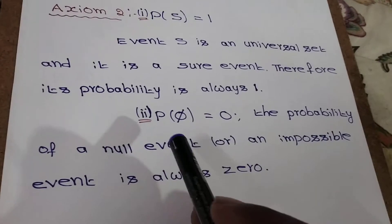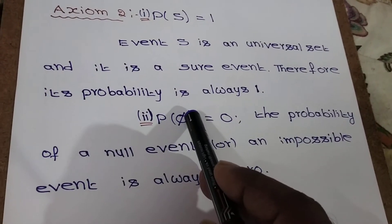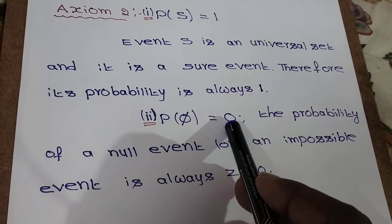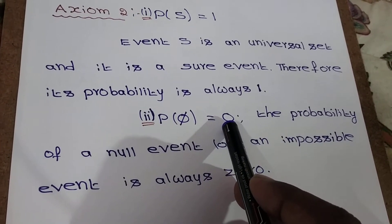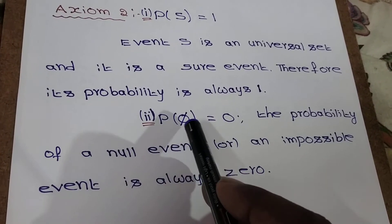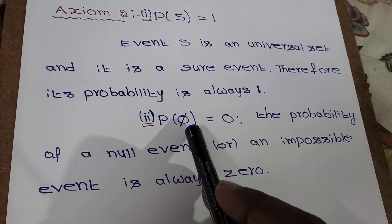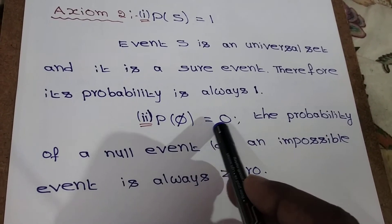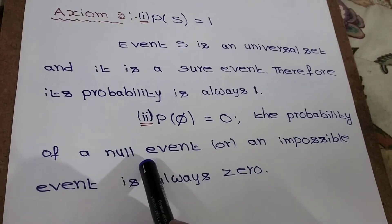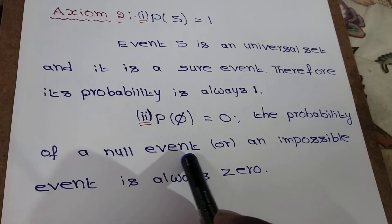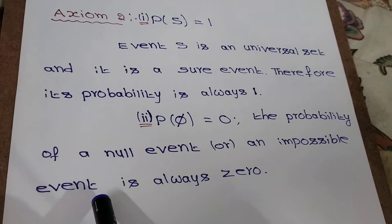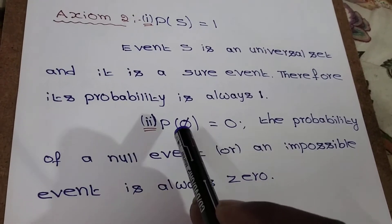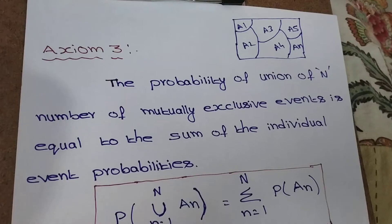Next, P of pi. Here pi is a null event. Probability of null event equal to 0. The probability of a null event or impossible event, P of pi, is always equal to 0.